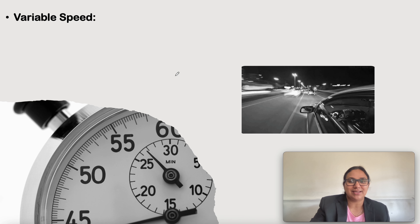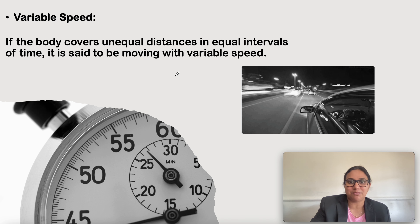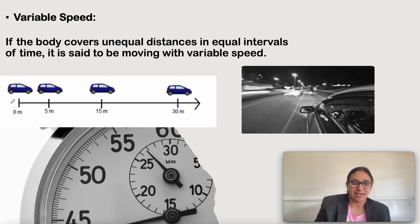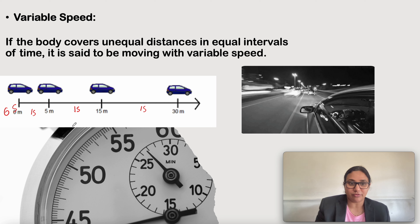What is variable speed? If a body covers unequal distance in equal intervals of time, then it is said to be moving with variable speed. As you can see here, at 0 seconds the car is at 0 meters. At 1 second it has reached 5 meters, next 1 second it has reached 15 meters, next 1 second it has reached 30 meters. The car is moving unequal distances in equal intervals of time, so it is moving with variable speed. Here the speed is not constant — it keeps on changing.